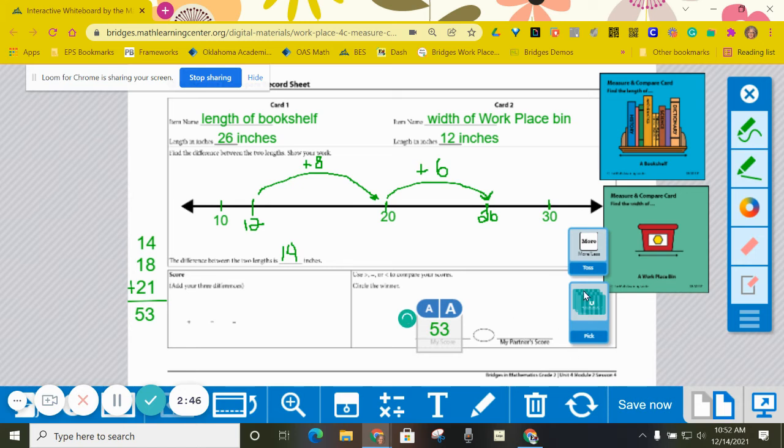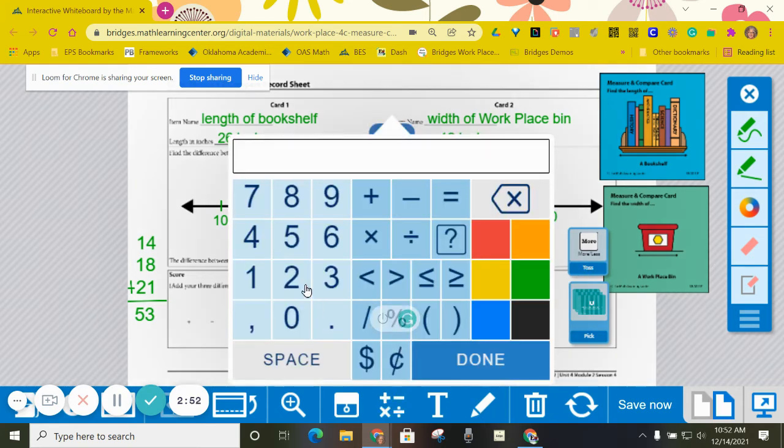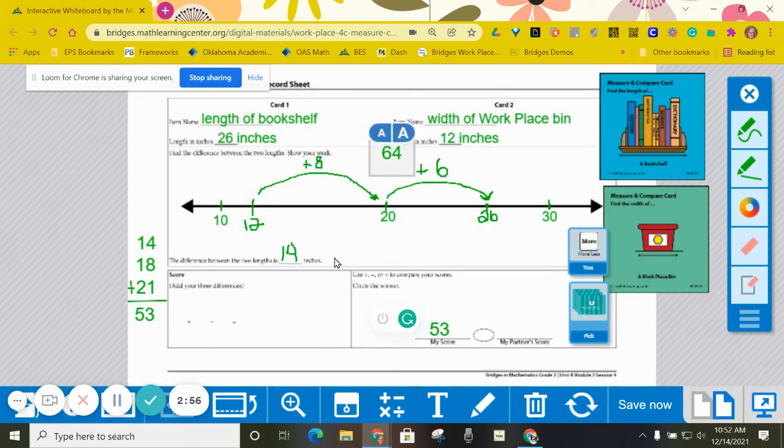And then to finish the game, you toss the more or less die. Let's put in a score for our partner. Let's say our partner got 64 inches, and let's put that right there.